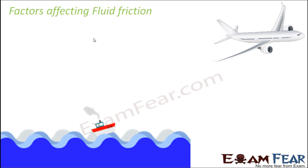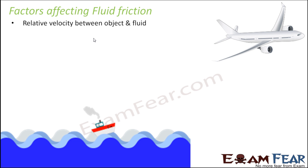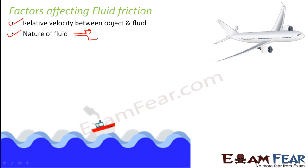Let us see what factors affect fluid friction. First is the relative velocity between the object and the fluid — how fast the object is moving through the fluid. If the object moves very fast or very slow, the friction offered by the fluid changes accordingly. Second is the nature of the fluid — what type of fluid is involved, for example air, water, or honey.